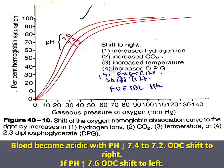The oxygen-hemoglobin dissociation curve can be shifted to the left or right by various factors. Shift to the right indicates dissociation of oxygen from hemoglobin and occurs under the following conditions: decrease in partial pressure of oxygen, increase in partial pressure of carbon dioxide, increase in hydrogen ion concentration, increase in body temperature, and excess of 2,3-DPG (diphosphoglycerate).